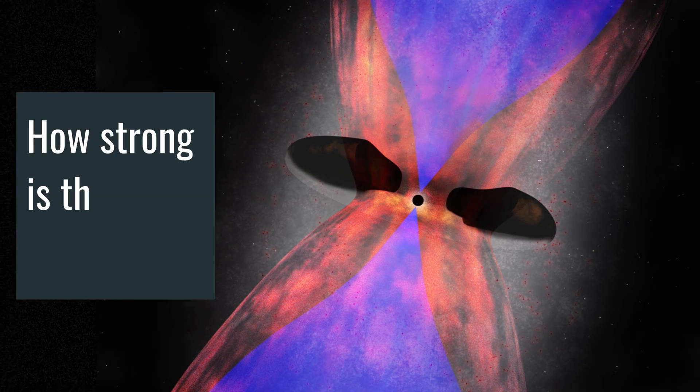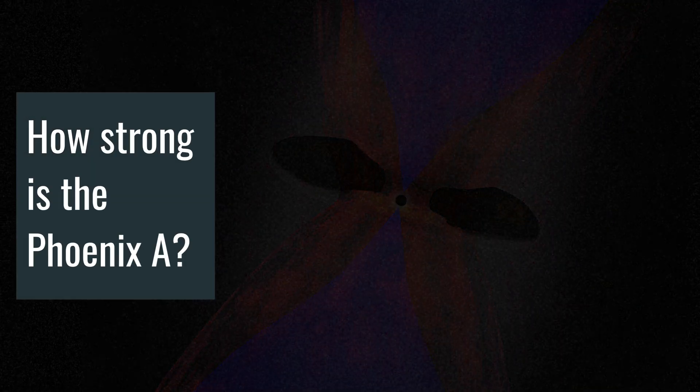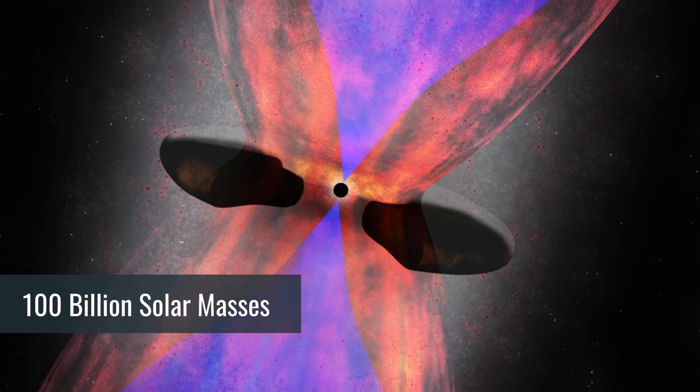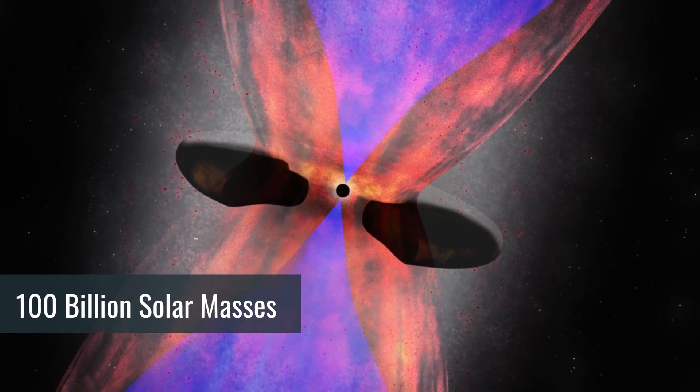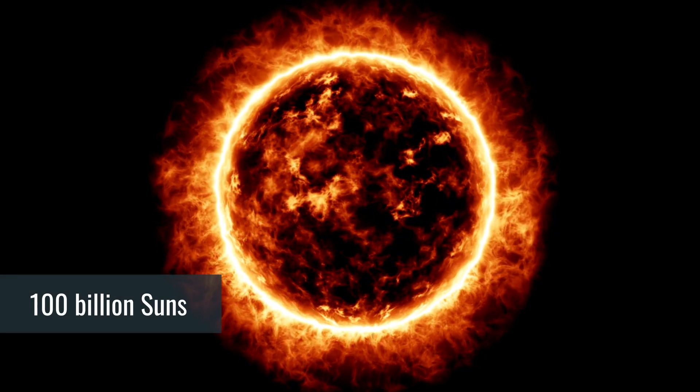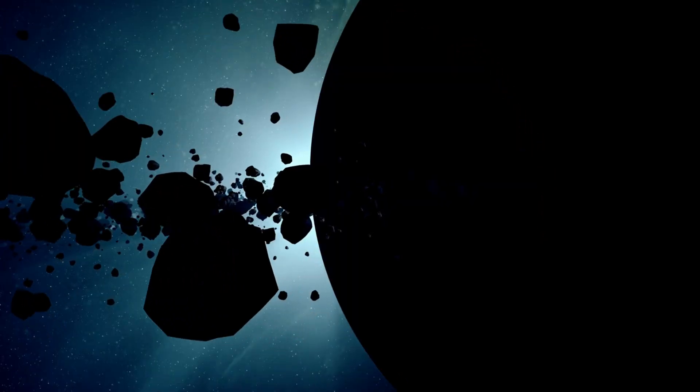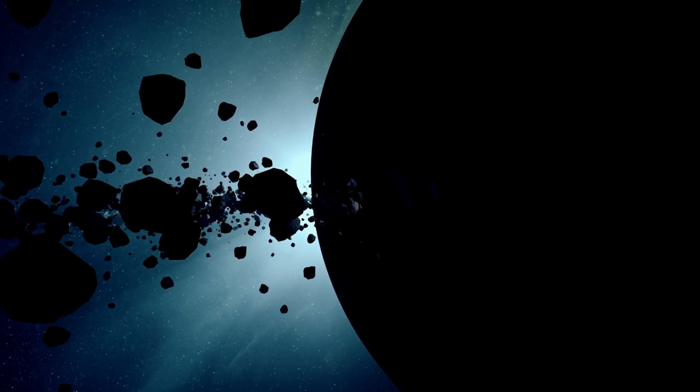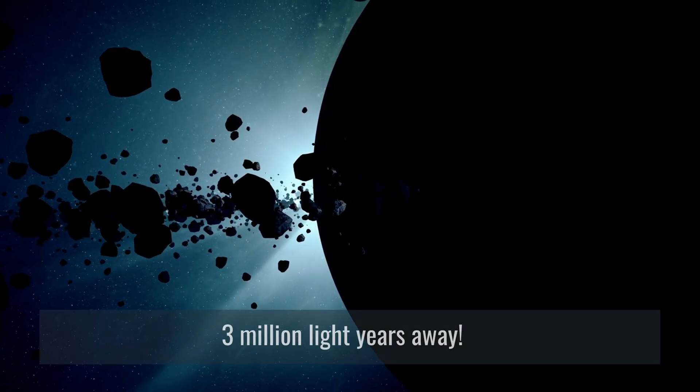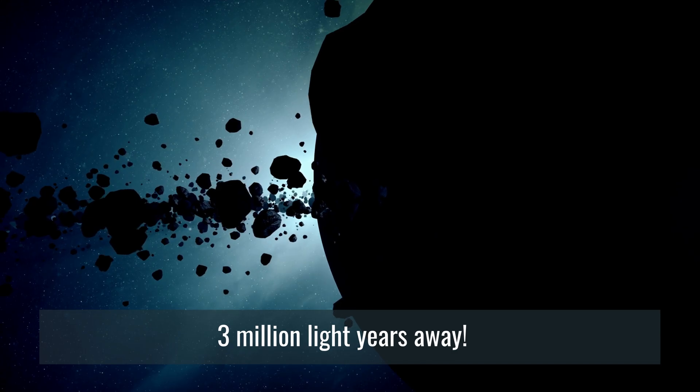How strong is Phoenix A? Phoenix A has a mass of 100 billion solar masses, which means 100 billion suns can fit into the Phoenix A black hole. And it is so strong that its gravitational pull can be felt as far as 3 million light years away.